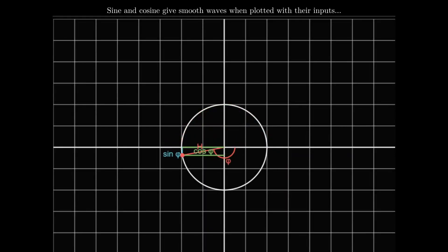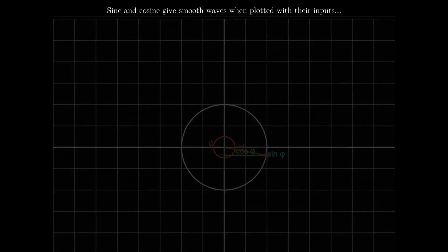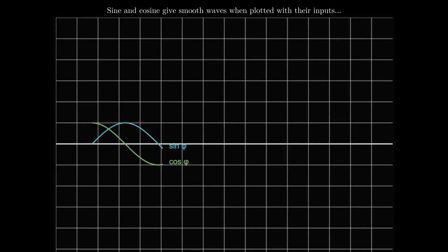You might notice that as the triangle rotates around the circle, the lengths of the opposite and adjacent oscillate. In fact, when we plot them relative to the angle, we get two oscillating waves, one slightly shifted to the right from the other. These are sine and cosine waves. Sine is blue here, and cosine is green.